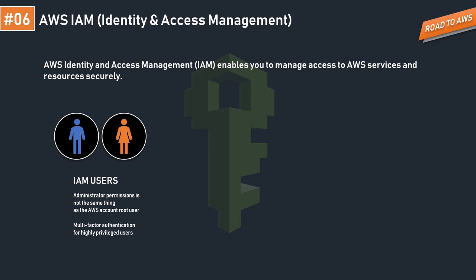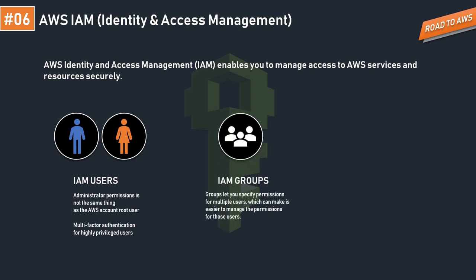There are different types of users: the root user, who created the AWS account, and the administrator user, who has full access to AWS resources and services but is different from the root user. There are multiple authentication levels — using SSH keys, access keys, or standard username and password credentials. To enhance security for highly privileged users, we also have multi-factor authentication.